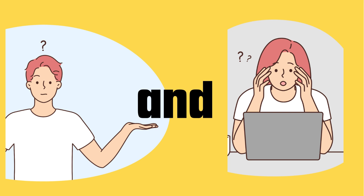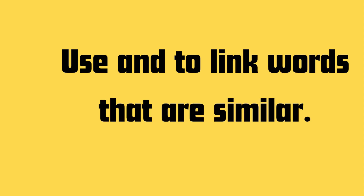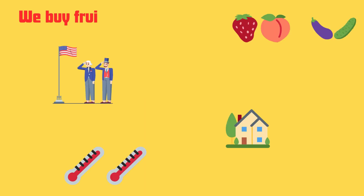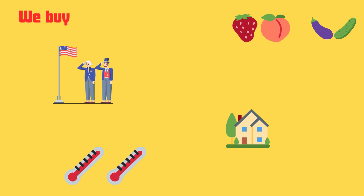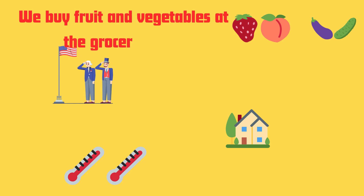So when do we use 'and'? We use 'and' to link words that are similar. For example: we buy fruits and vegetables at the grocery store.